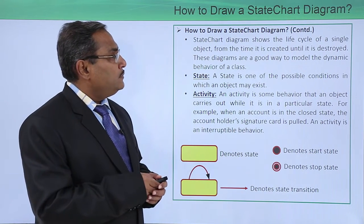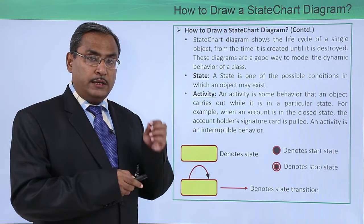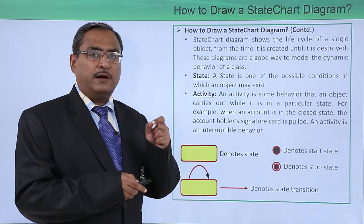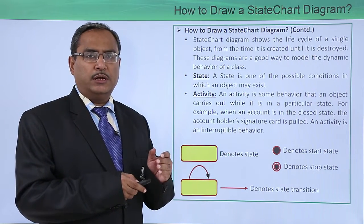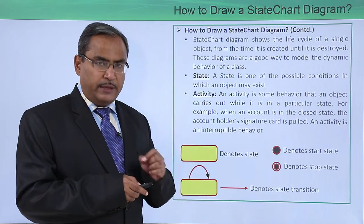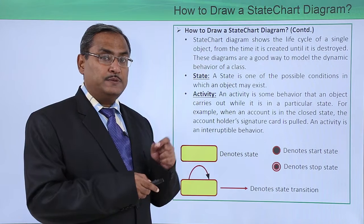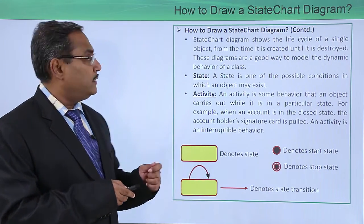State Chart Diagram shows the life cycle of a single object. Always remember this one, a State Chart Diagram will depict the life cycle of a single object. Life cycle means from the creation to the termination. And during this particular phase, the object may have different kinds of states and different events will have the state transition from one to another.